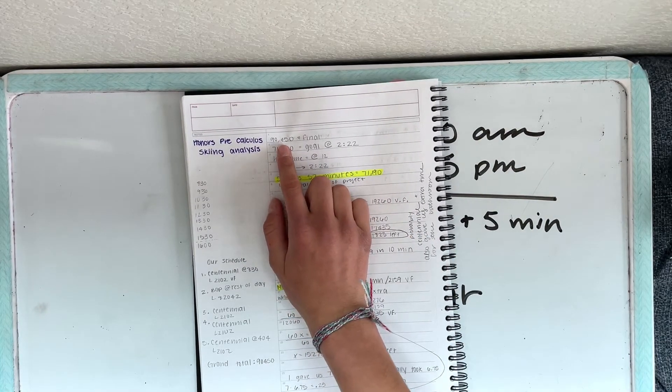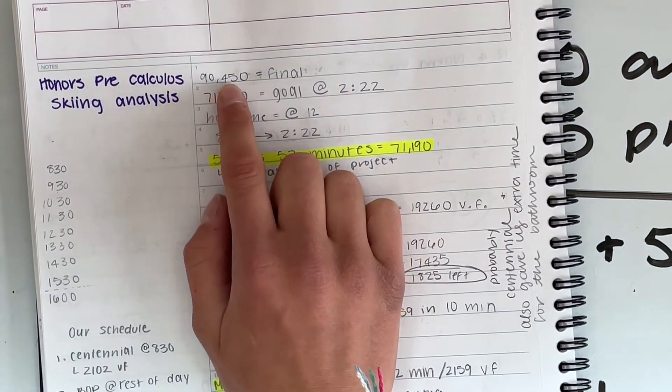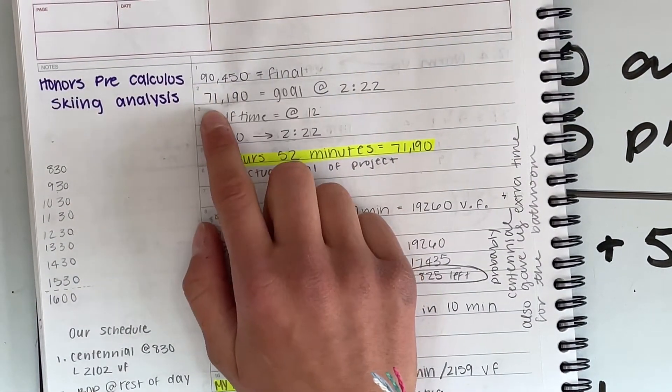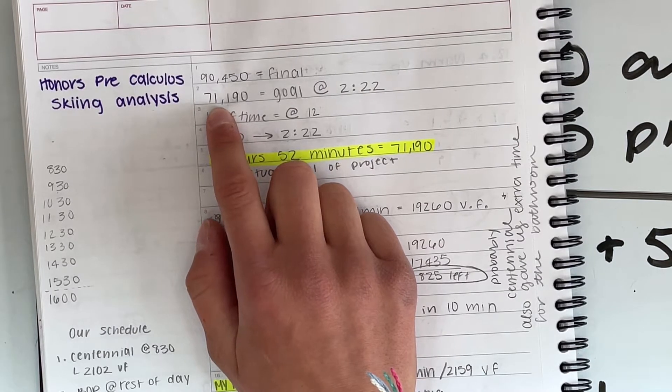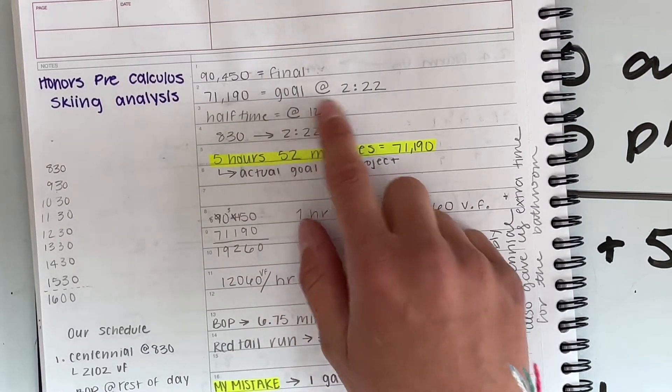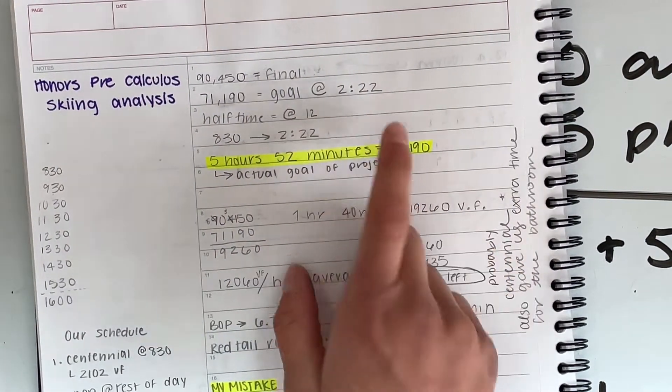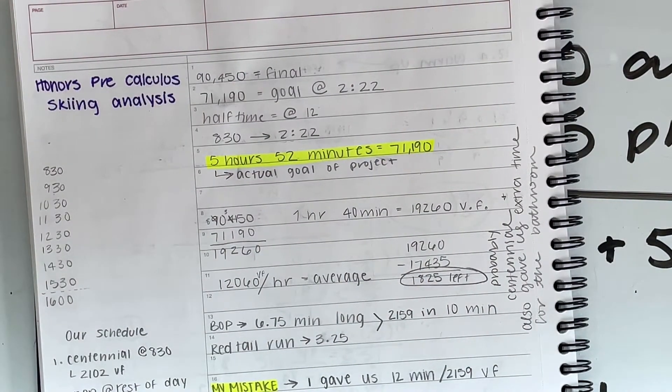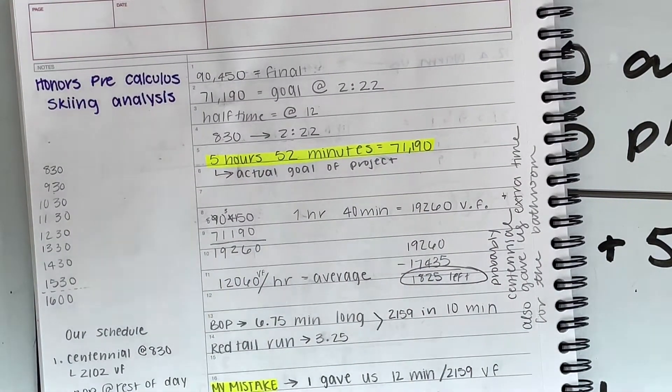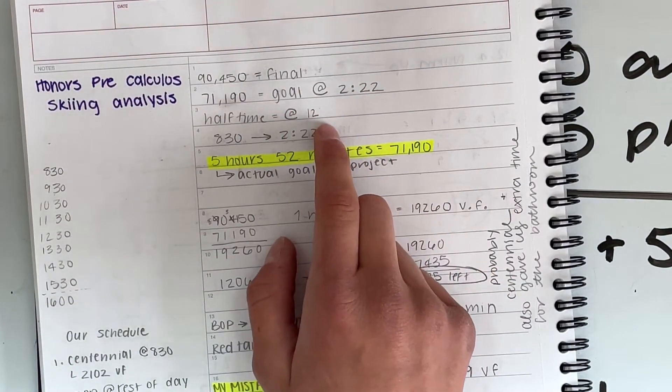So this was our final. Let me zoom you in. This was our final 90,450. Our goal was 70,000 and we were able to get 71,190 vertical feet at 2:22 p.m. Meaning that we had some extra time. So we said, why don't we just go for 90? Our halfway mark was 12 o'clock, 12:15 to be precise.